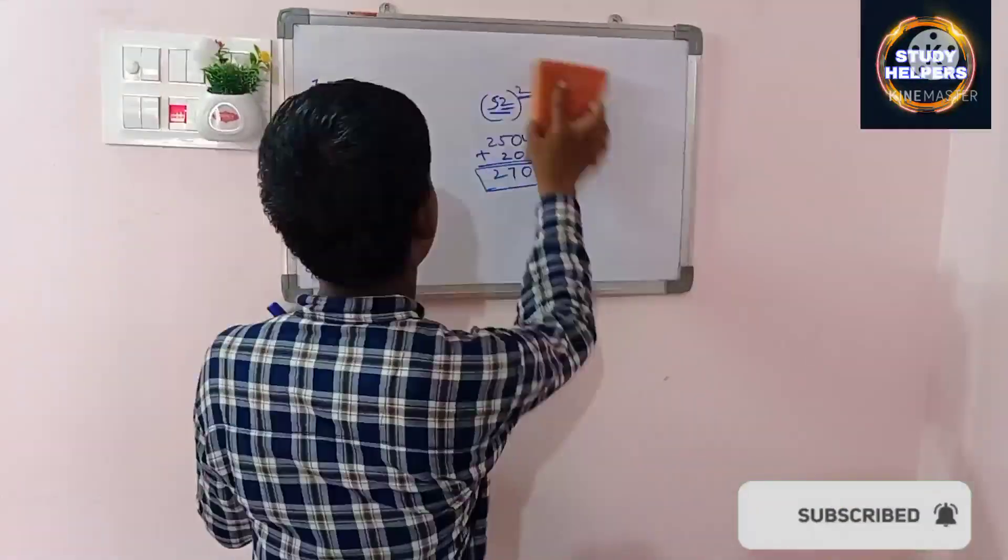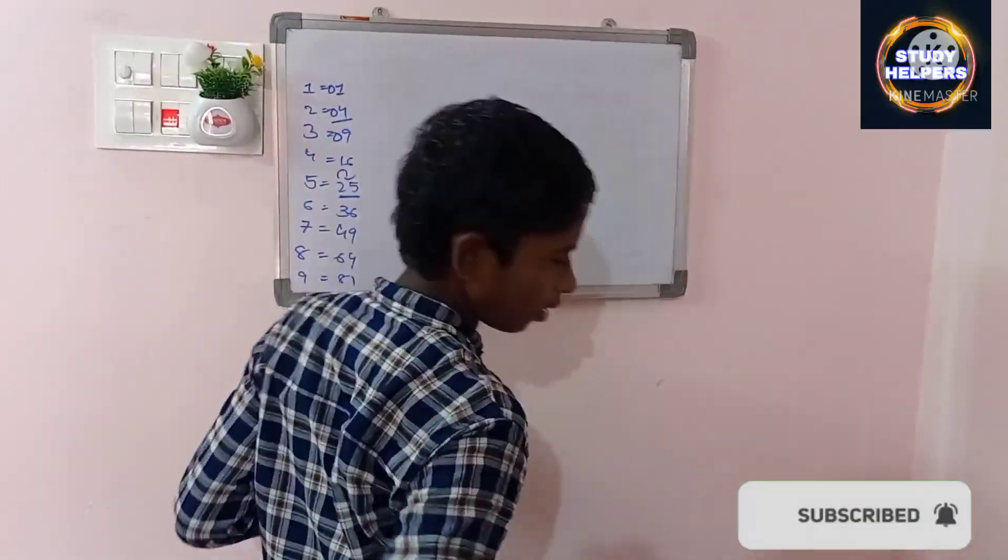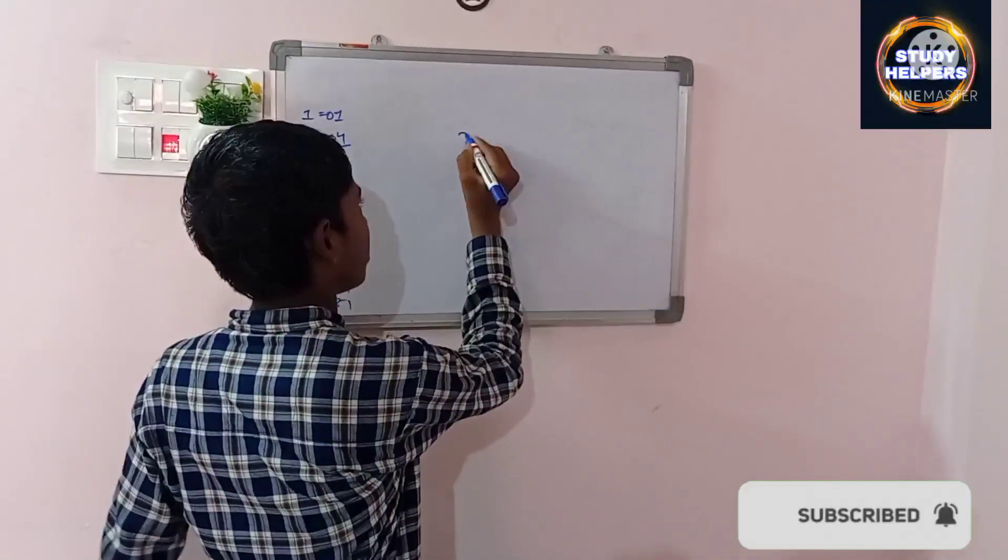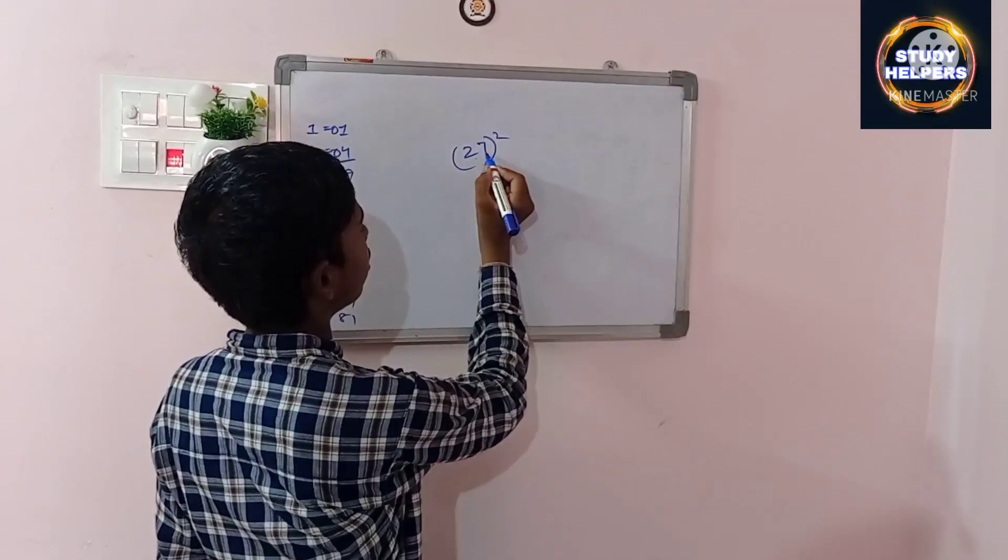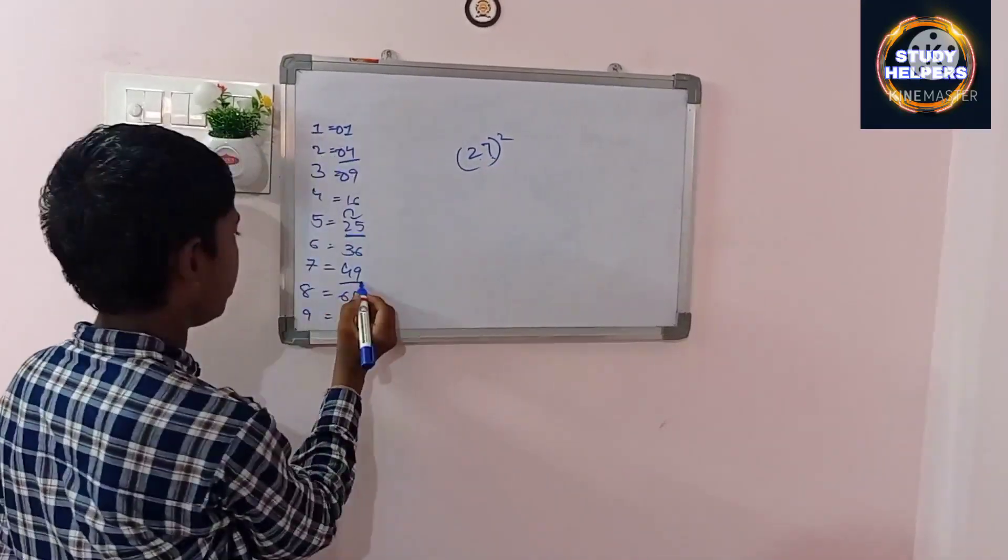And example 2. 27... Example, 72. First 7 square, we should take 49.